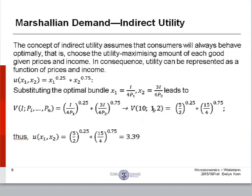Indirect utility in terms of income 10 and prices 1 and 2. Thus, our utility when we maximize our consumption in terms of income and prices, our utility is equal to 3.39.